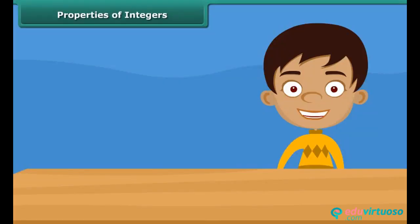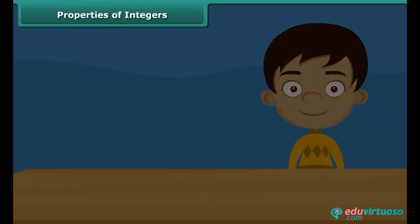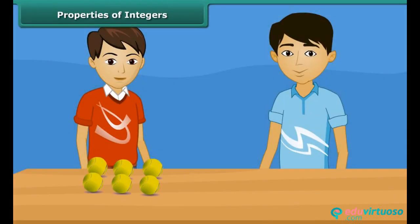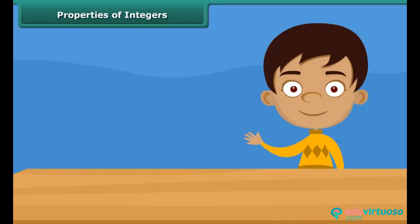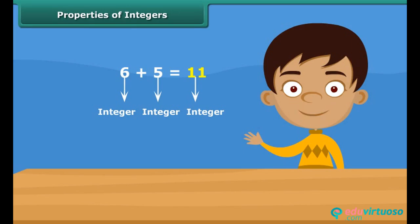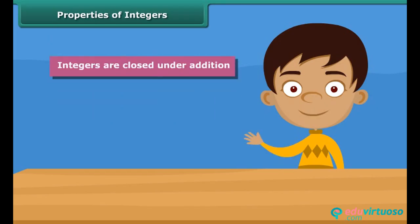Students, what do we get if we add two integers? Let us see. Rohan has six balls and his friend Sohan has five balls. So how many balls are there in total? Eleven balls in total. From this example we can say that addition of two integers is also an integer. So integers are closed under addition.